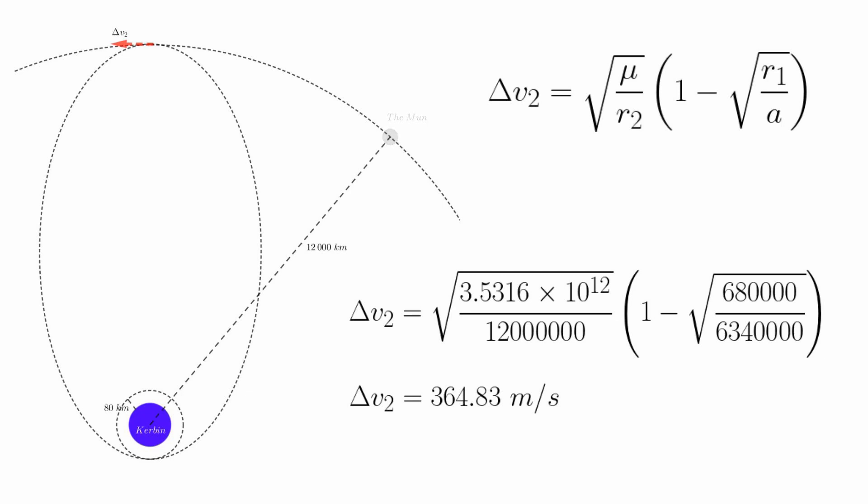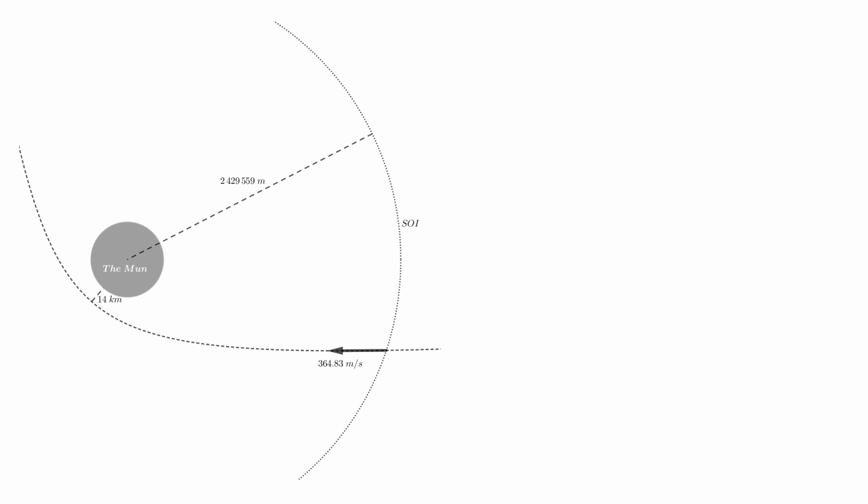We just need to really think about what it is telling us. If we ignore the moon for a moment, this number gives us the delta V of the burn that would be required to insert us into an orbit identical to the moon's orbit about Kerbin. Said in another way, this is the velocity we would need to add to our vessel in order to get up to the velocity we would need to be an object in the moon's orbit. But the moon is clearly an object in the moon's orbit — this means that at Apoapsis, the difference between our velocity and the moon's velocity is 364.83 meters per second. In other words, we would be encountering the moon's sphere of influence at a velocity of 364.83 meters per second.